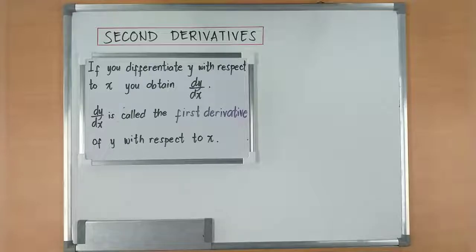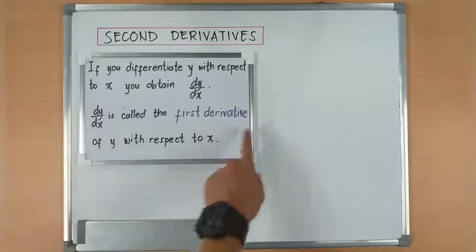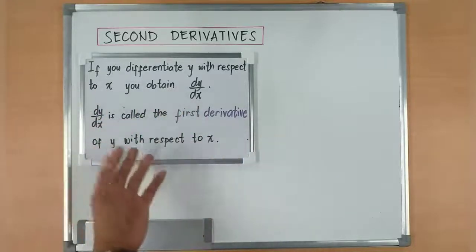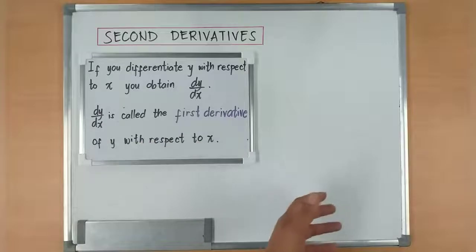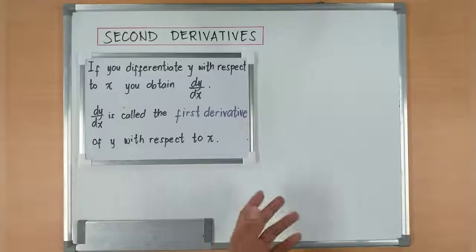We are going to deal with lesson about second derivatives which we all know that when you say second, it's twice that you are doing it. So basically, we've learned about derivatives already. If you differentiate y with respect to x, you obtain dy over dx. And dy over dx is called the first derivative of y with respect to x.